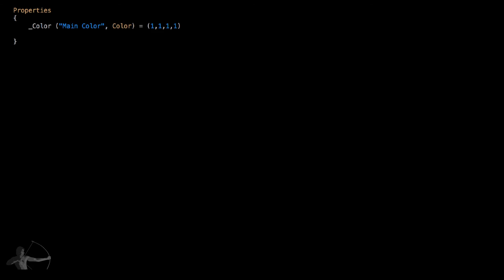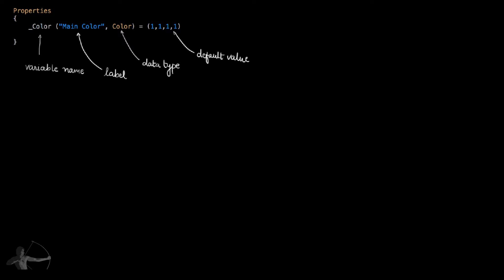Let's get back to the blackboard and see how we have defined this complete statement. The first thing written is a variable name which we will use inside our shader. 'Main Color' is the label that will appear inside Unity's inspector. The data type tells what type of variable it is and the default value is 1,1,1,1, which as a color means R1 G1 B1 A1.